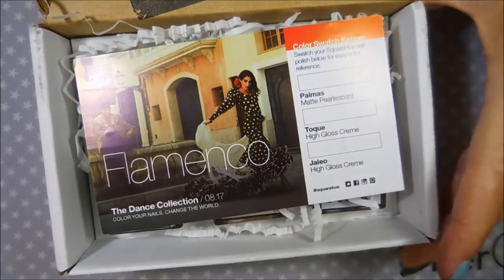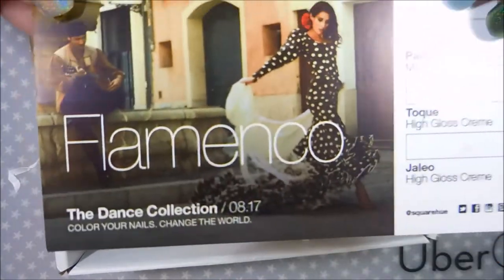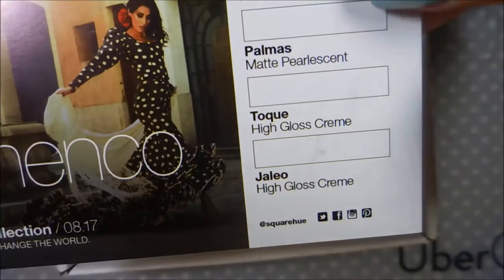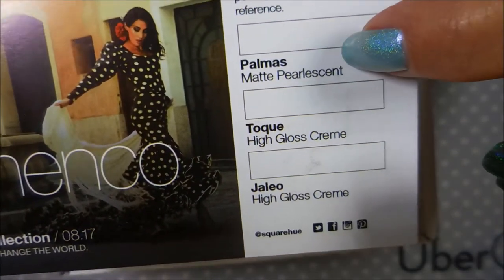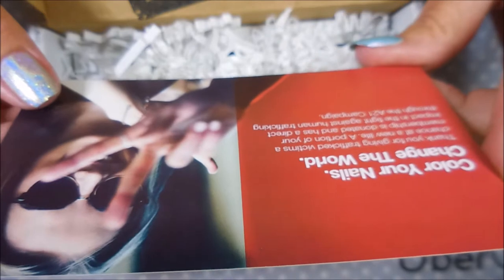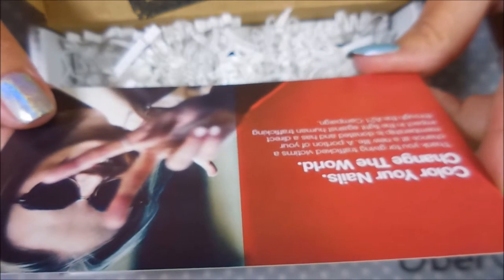So, here we go, and this year's theme is the dance collection. We've got our great card here, and this is the Flamenco, and it's got your swatching spots over here with the names and the descriptions of the type of polish they are. And, color your nails, change the world. Thank you for giving traffic victims a chance at a new life. A portion of your membership is donated and has a direct impact on the fight against human trafficking through the A21 campaign. So, always, always supportive of this company.